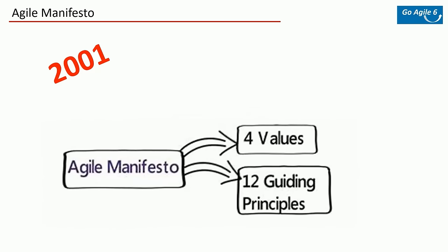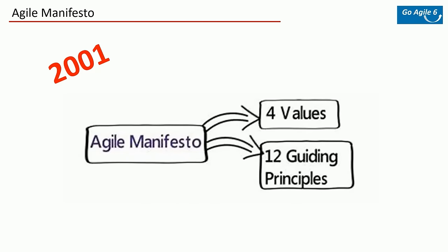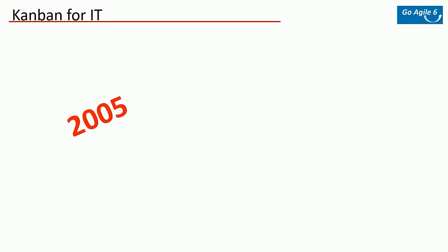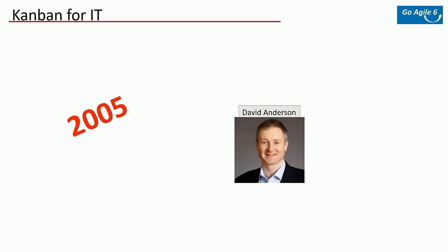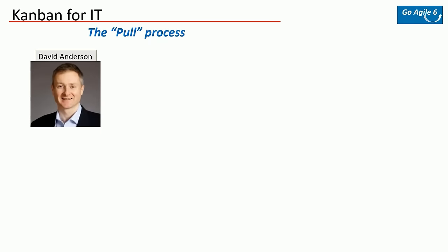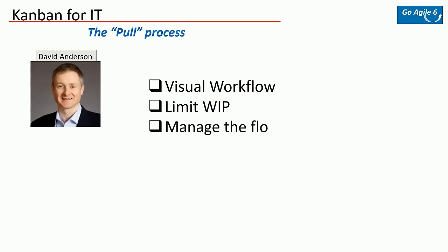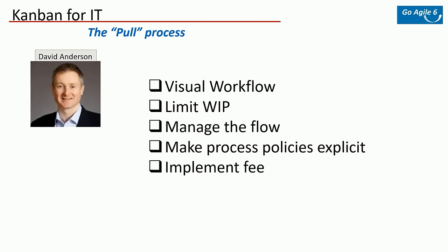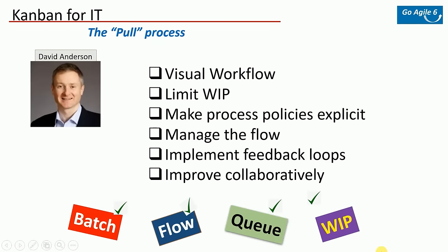Around 2005, David Anderson took Toyota's production system and started applying it in the IT process, coming up with Kanban for IT. He called it the pull process. He came up with six principles for Kanban in IT: visual workflow, limit work in progress, managing the flow, make the process policies explicit, implement feedback loops, and improve collaboratively.